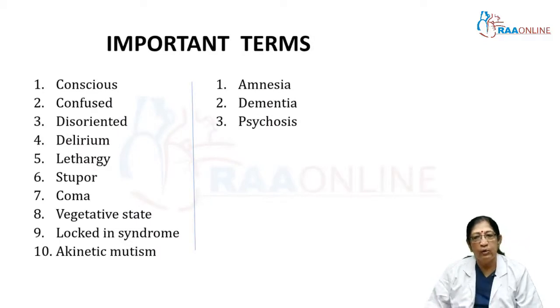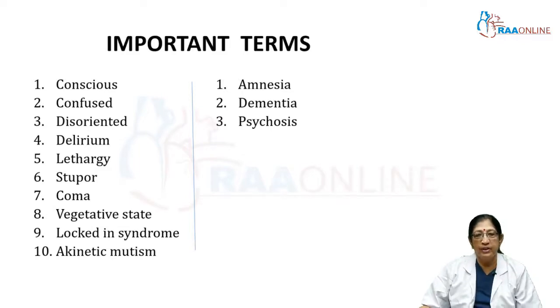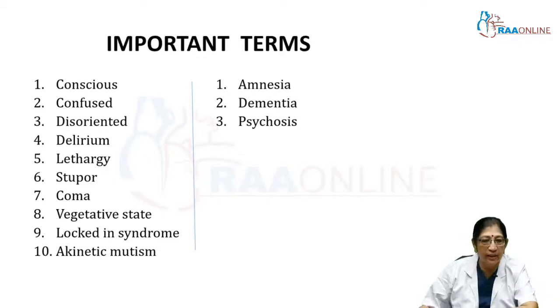Before I go into that talk, we should learn some important terminologies — what is consciousness, who is a conscious person, who is confused, disoriented, and what is delirium.